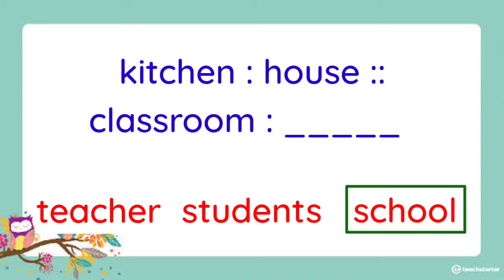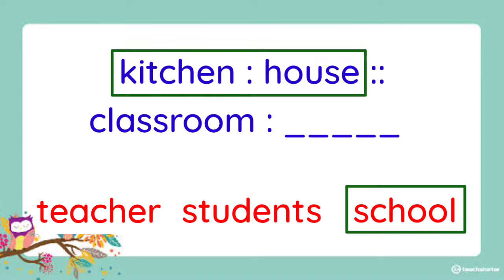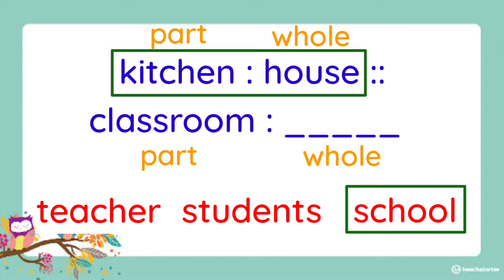Let us examine the first pair of words — kitchen and house. What is the relationship between them? Kitchen is a part of a house, right? So it is part to whole. Therefore, we have to think of what something a classroom is part of. Classroom is part of a school.